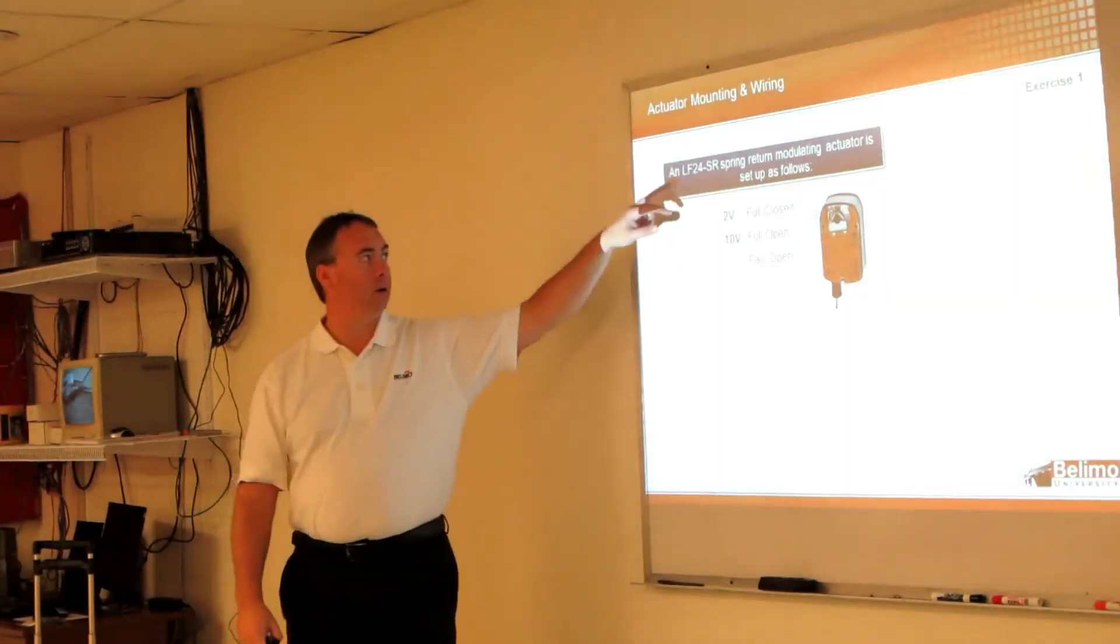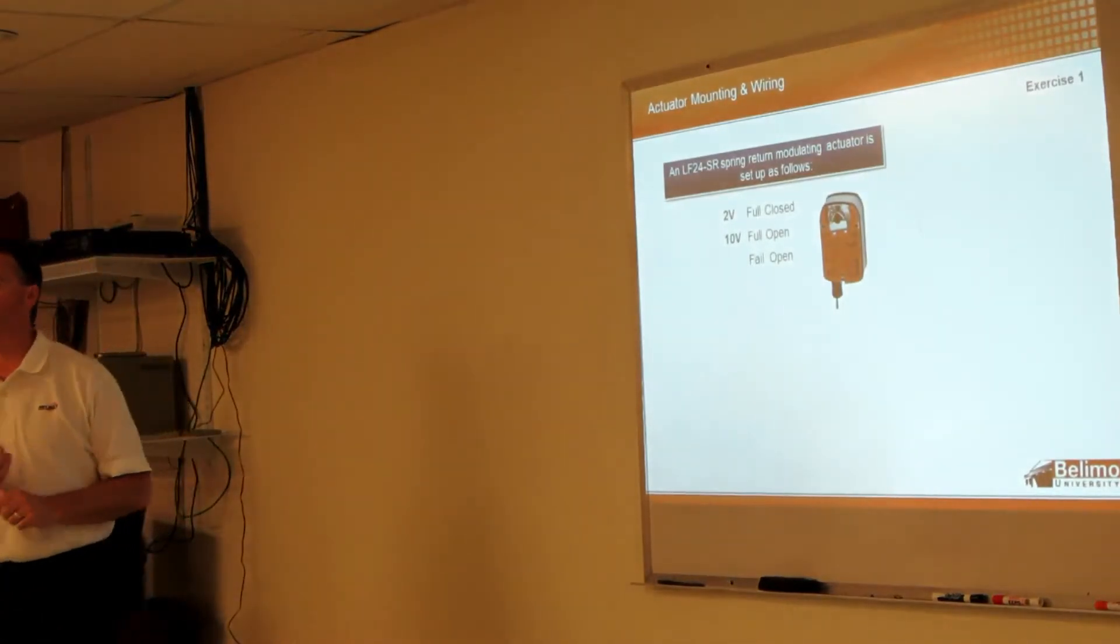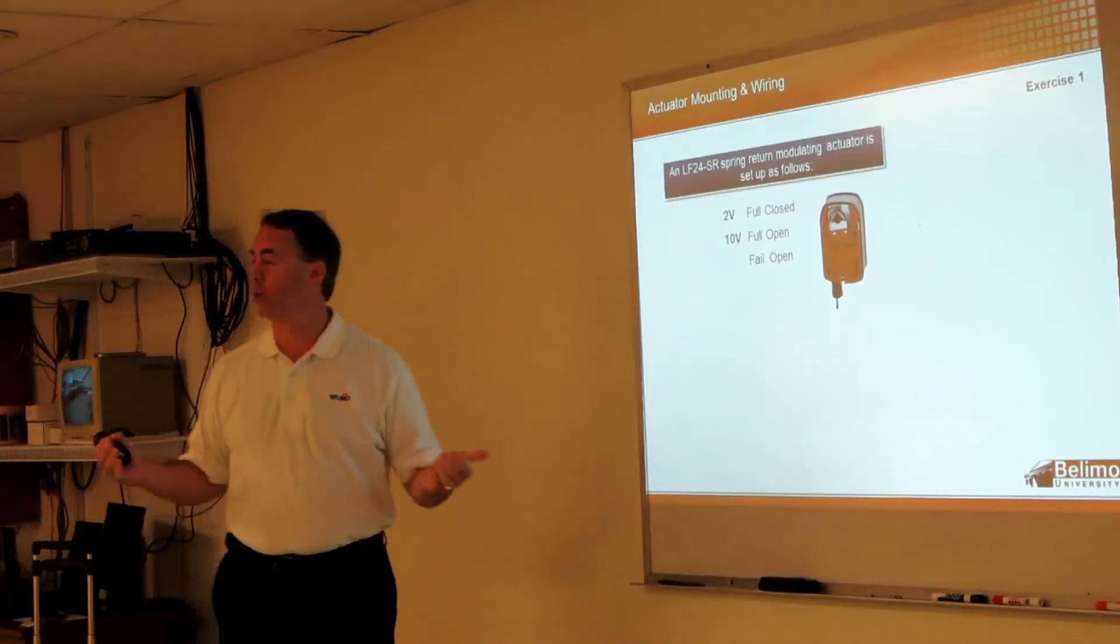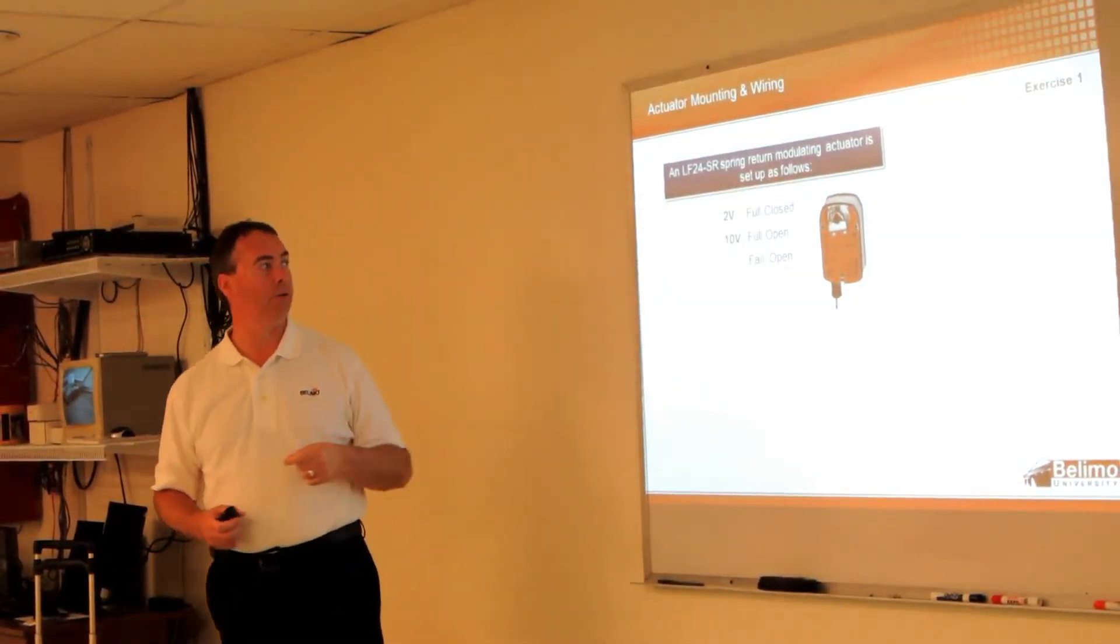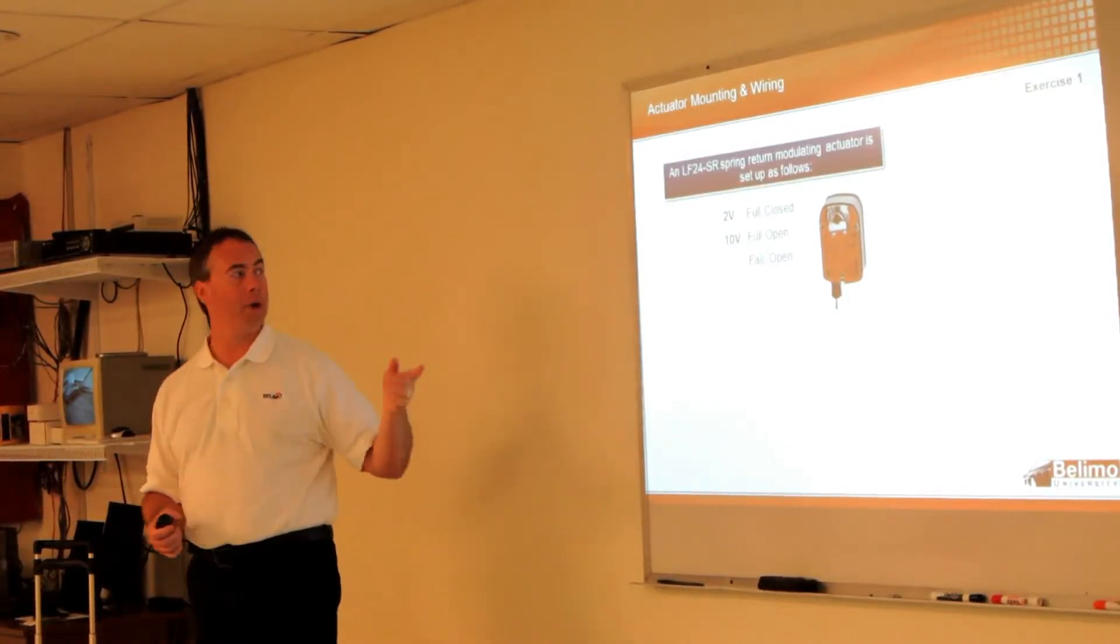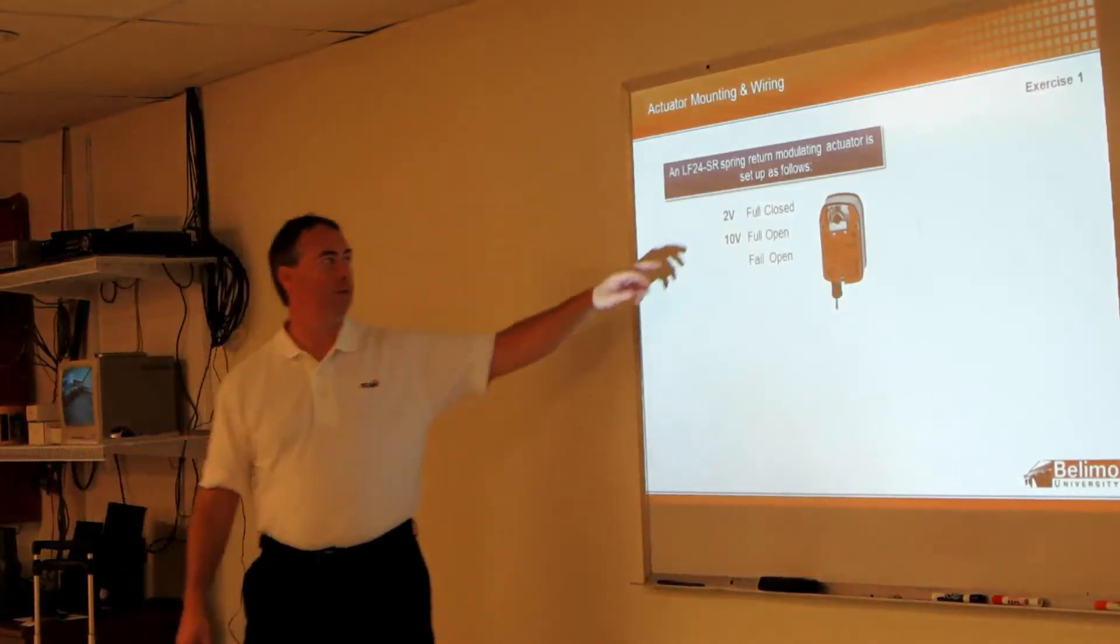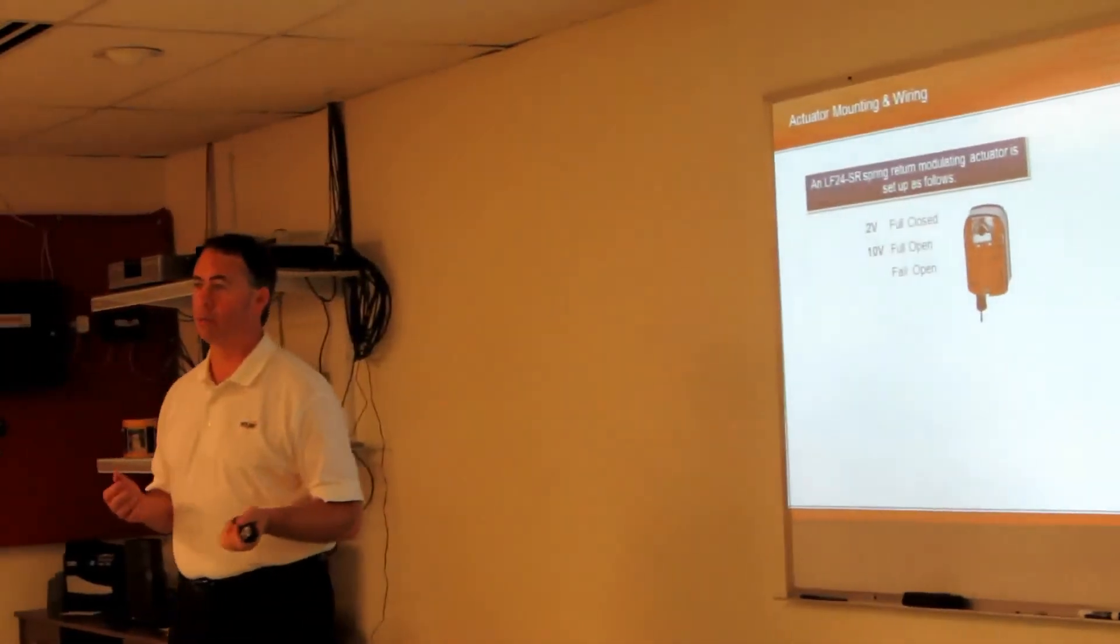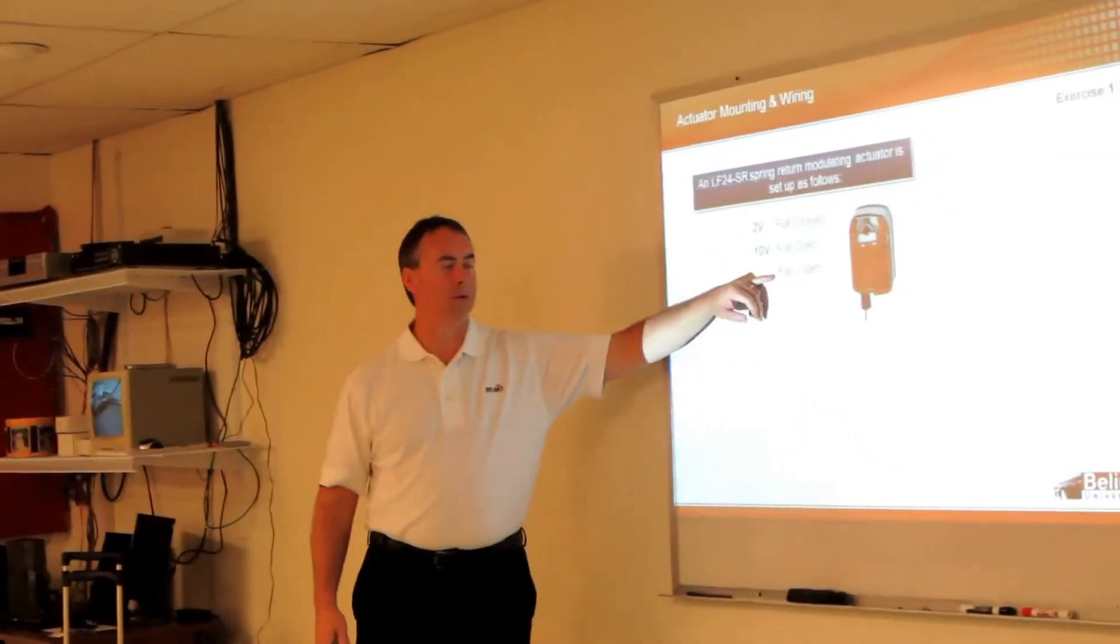So for example here we have an LF24-SR. We know that an LF is a 35 inch pound spring return. SR means it's a 2 to 10 volt control signal, set up with 2 volts fully closed, 10 open, and it's fail open. So that means if 2 volts is closed, that means it's a normally closed actuator. Normally closed, fail open.